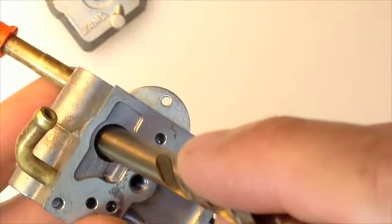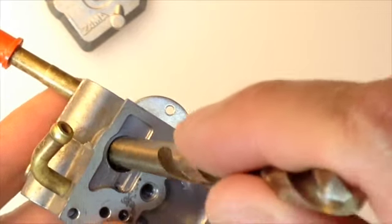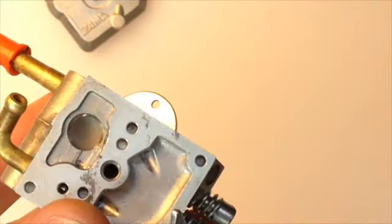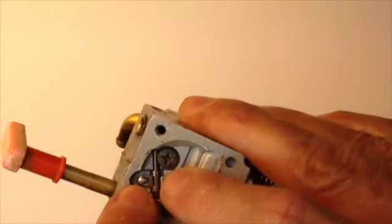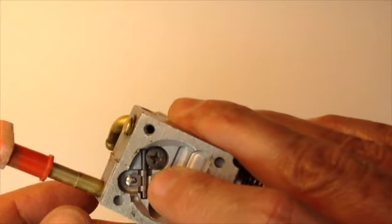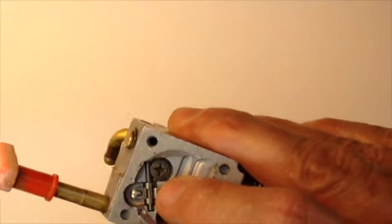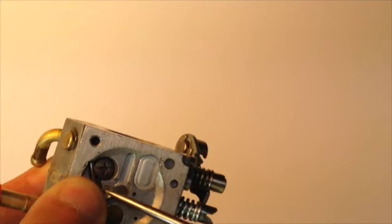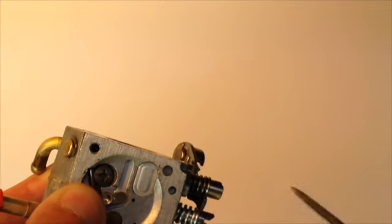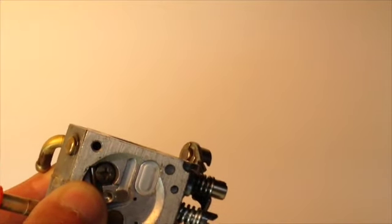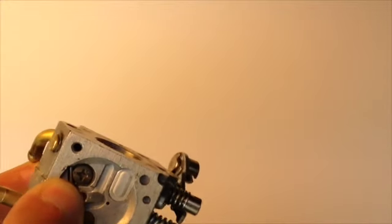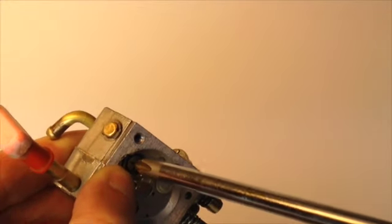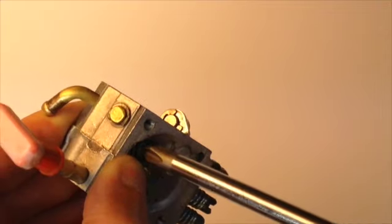Here I'm inserting the new strainer, little screen, using the end of a drill bit to place it. Here we're putting in the new needle and the inlet control lever, and there's a spring that you have to get just right. Now tighten the screw up.